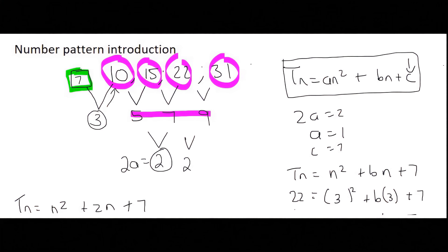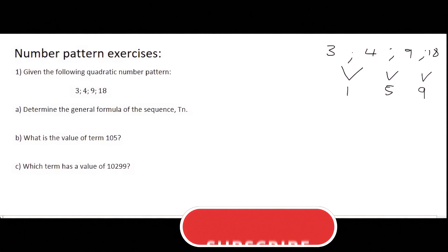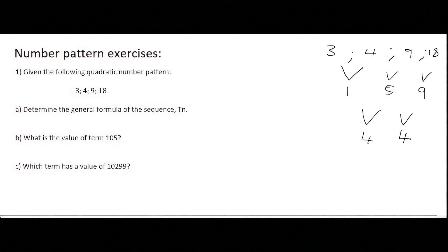Always be sure to check your answer at the end. Moving on to the first example: we're given a quadratic number pattern with numbers 3, 4, 9, and 18. The first question asks us to find the general formula. Working out the first differences gives 1, 5, and 9. The second differences are both 4 — constant — confirming it's a quadratic pattern. Using the method: 2A = 4, 3A + B = 1, A + B + C = 3.